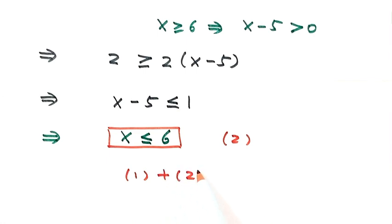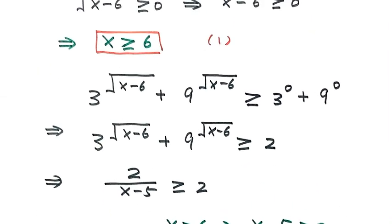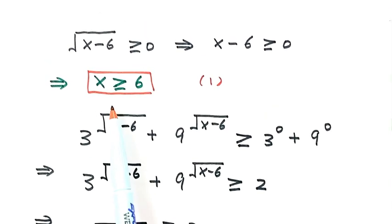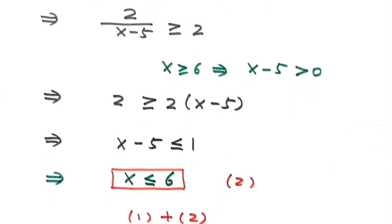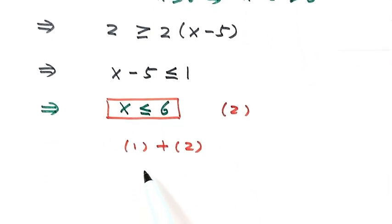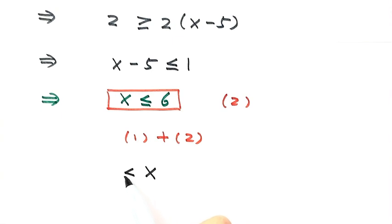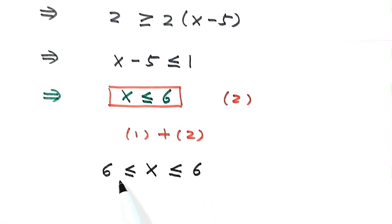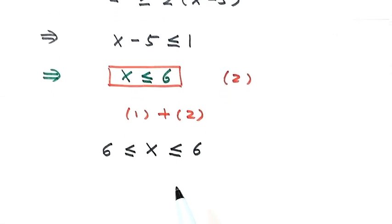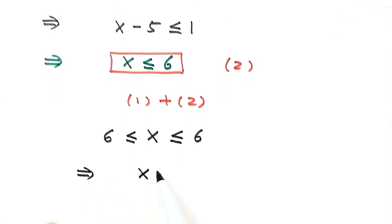Now let's combine Result 1 with Result 2. By Result 1, x is bigger than or equal to 6. By Result 2, x is less than or equal to 6. Since x must satisfy both conditions, x can only equal 6. So 6 is the only solution of this equation.